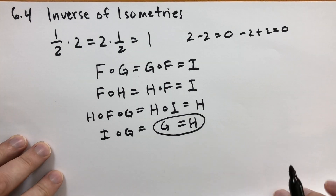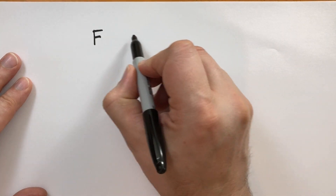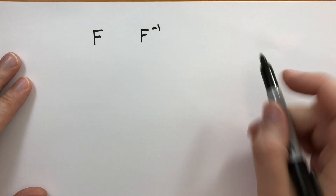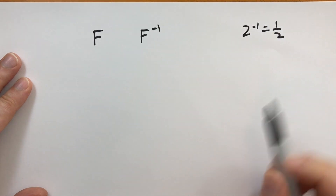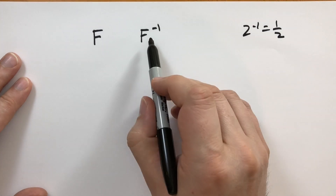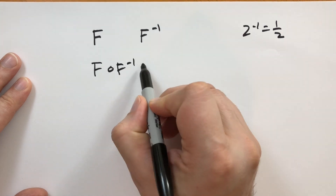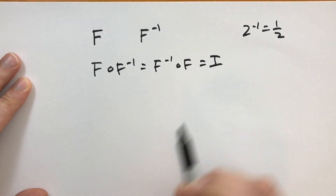So what do we do with inverses? Let's first give inverses a name. We're going to say the isometry F has an inverse F^(-1), and this notation will make a lot of sense very quickly — just like 2^(-1) equals 1/2. This has the specific meaning that F composed with F^(-1) in either direction gives back the identity.